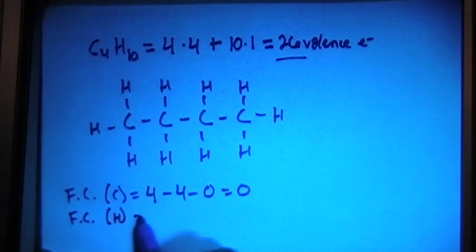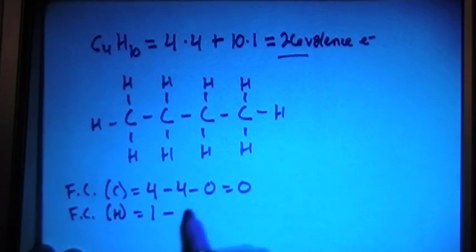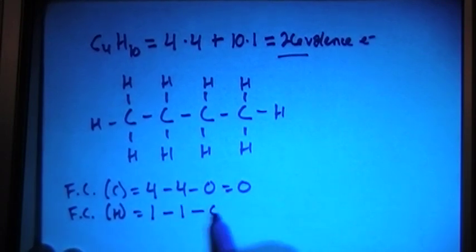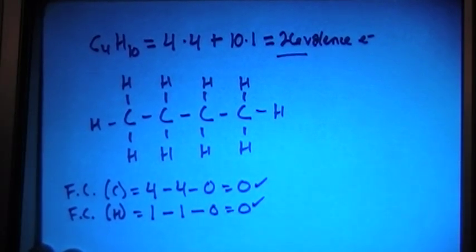Now we can check the formal charges on the hydrogens, and each of those is just single bonded, and that's it. So one valence electron brought in minus one bond for each minus zero non-bonding electrons gives you a formal charge of zero.